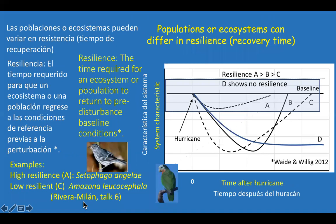Populations or ecosystems can differ in their resilience — that is, the recovery time. In a diagram again from Wade and Willig, three response trajectories are shown: A returns to baseline more quickly than B, and B more quickly than C. However, D does not return to the baseline at all — it moves to a different state or population level. Bird populations can fit this scheme, and you'll want to hear the talk by Frank Rivera-Milan.